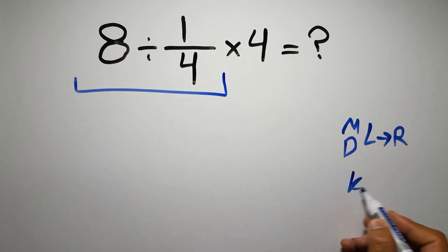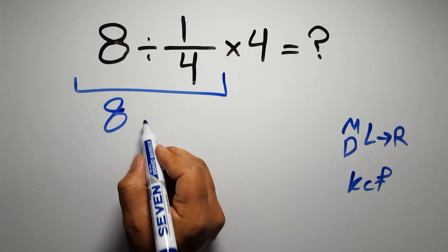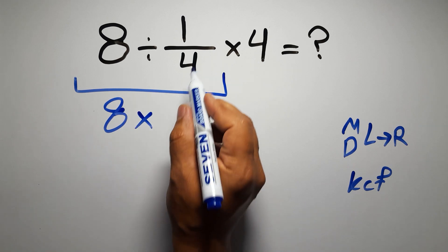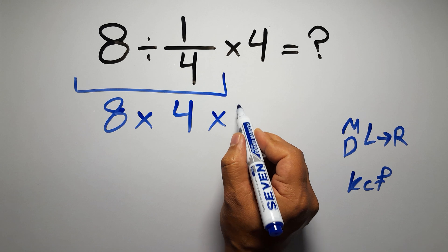According to the KCF rule, K stands for keep, C stands for change, and F stands for flip. We can write: keep the first fraction, change division to multiplication, and flip the second fraction. And again here we have times 4.